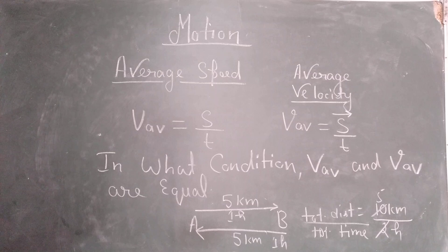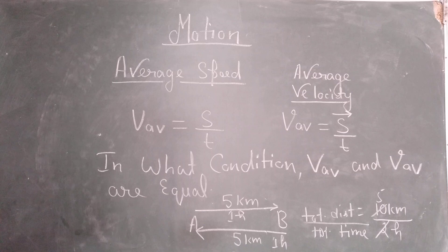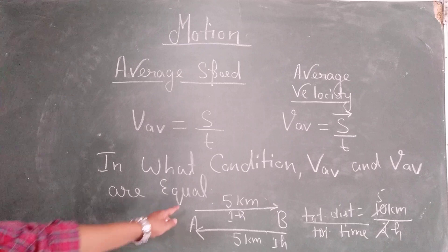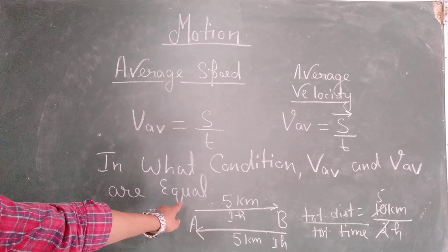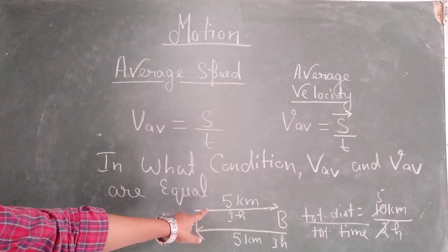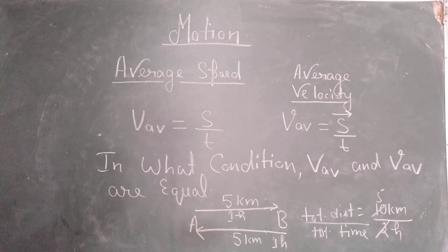You might have studied earlier, if the initial and final positions are same, then what happens? The displacement becomes 0. Since initial and final position is A itself, in this case total displacement will be 5 km minus 5 km equals 0.